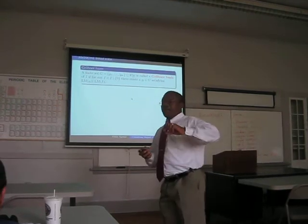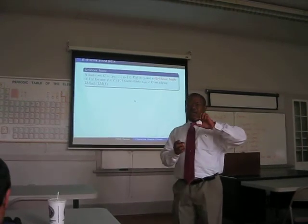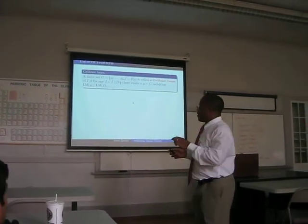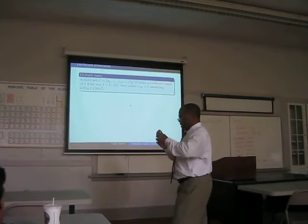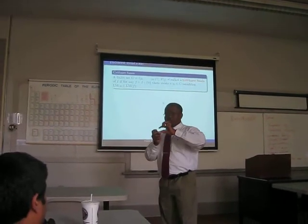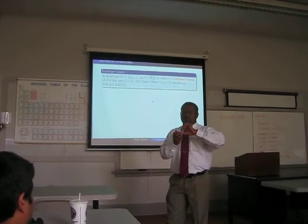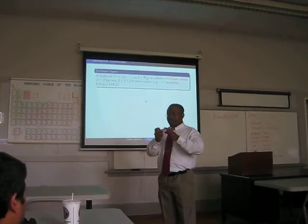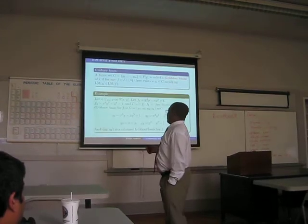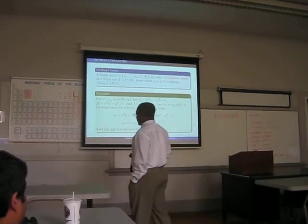So each time you take a non-zero element from the ideal i, then you have, say, a Gi from the G, such that its leading monomial divides the leading monomial of f. And of course, here is an example.